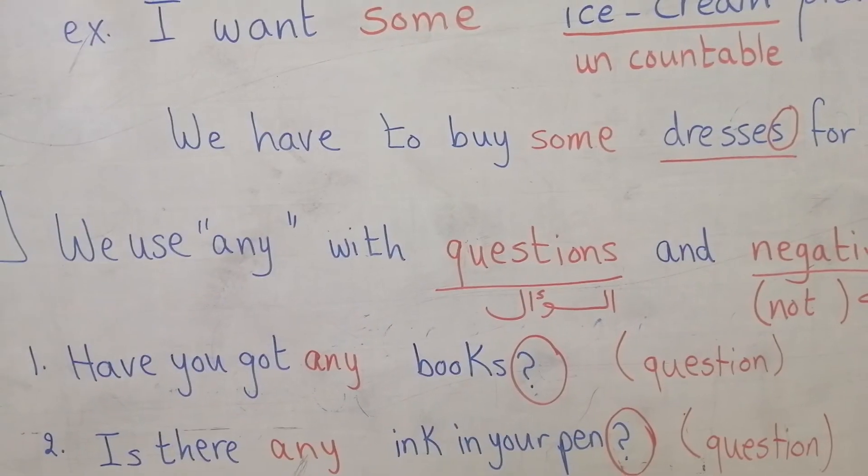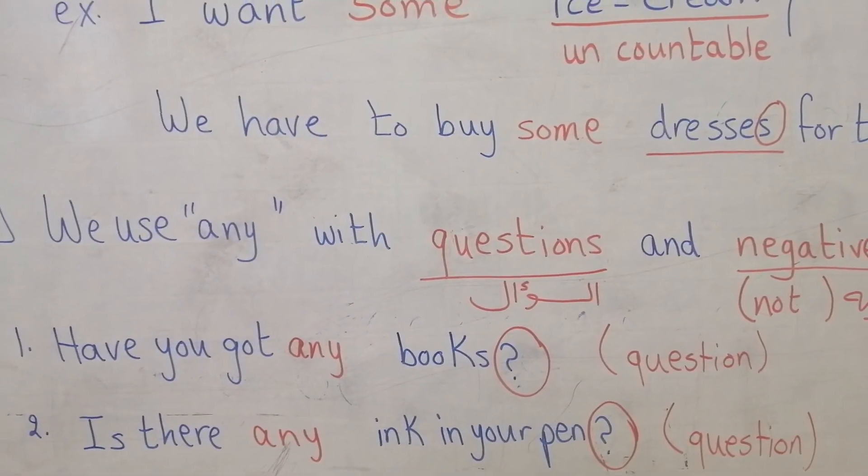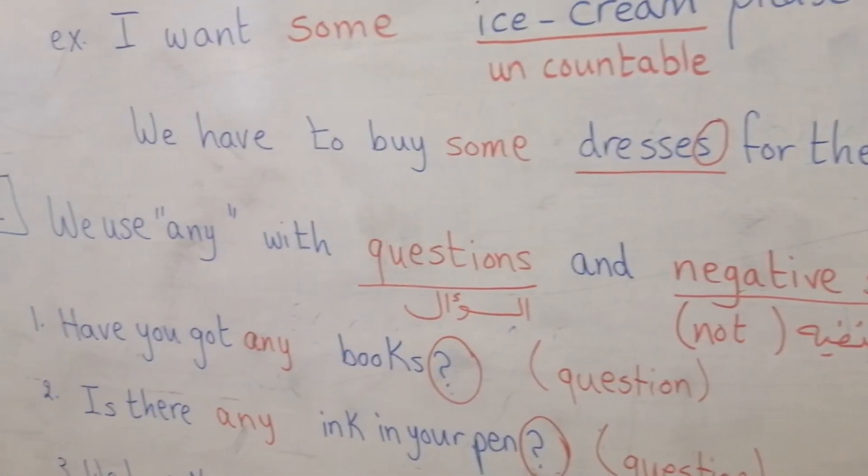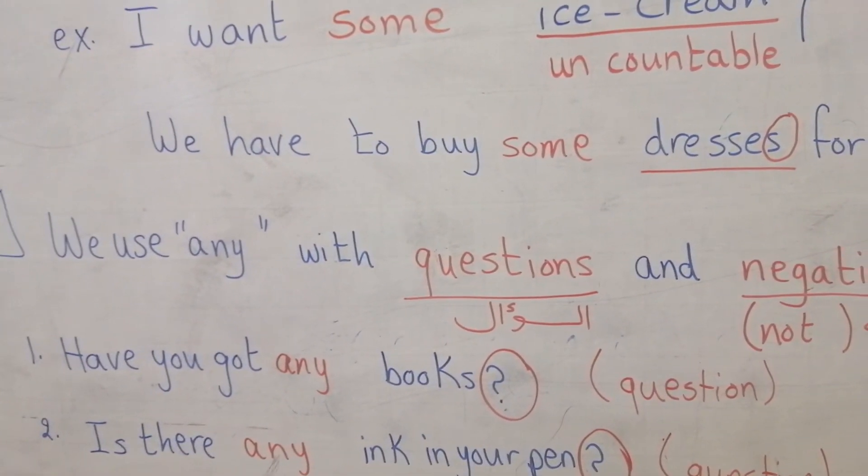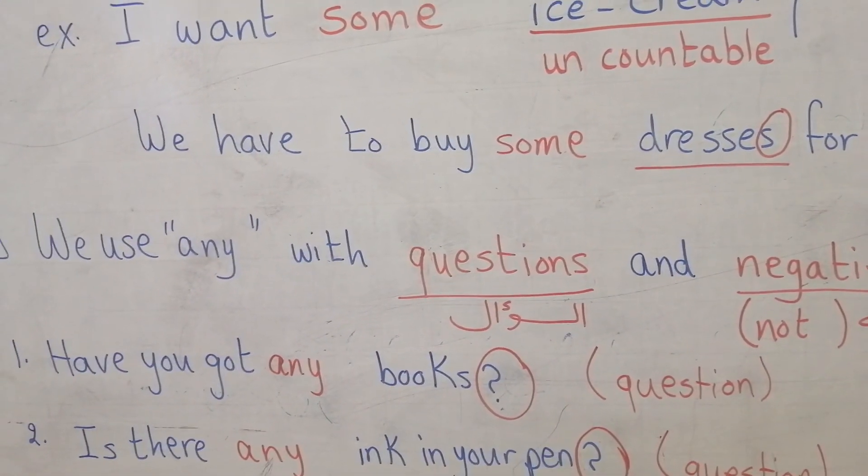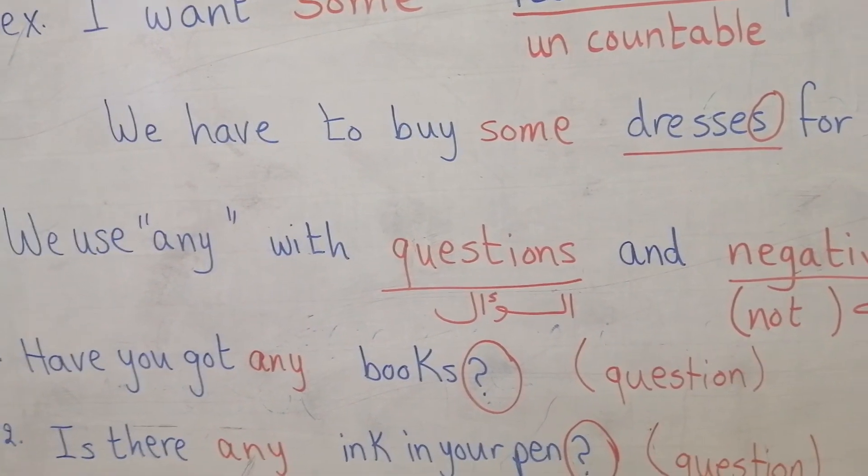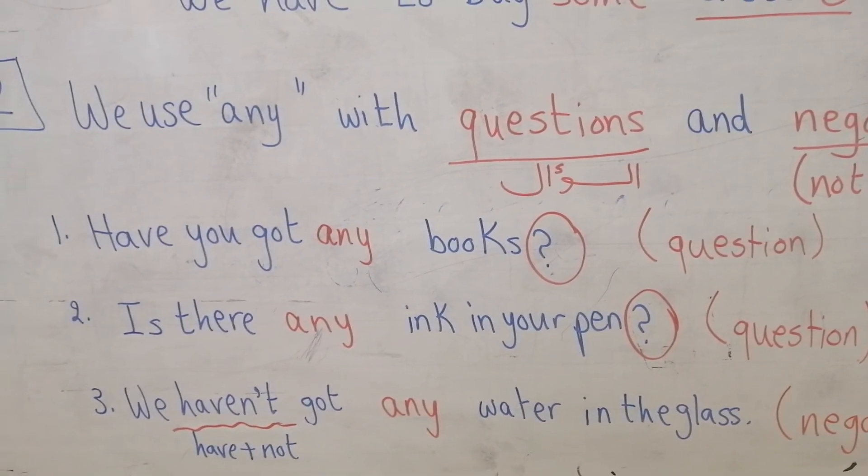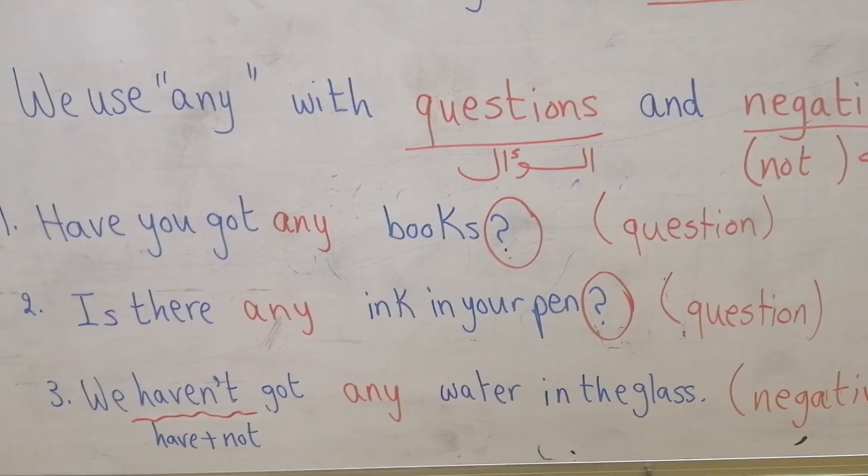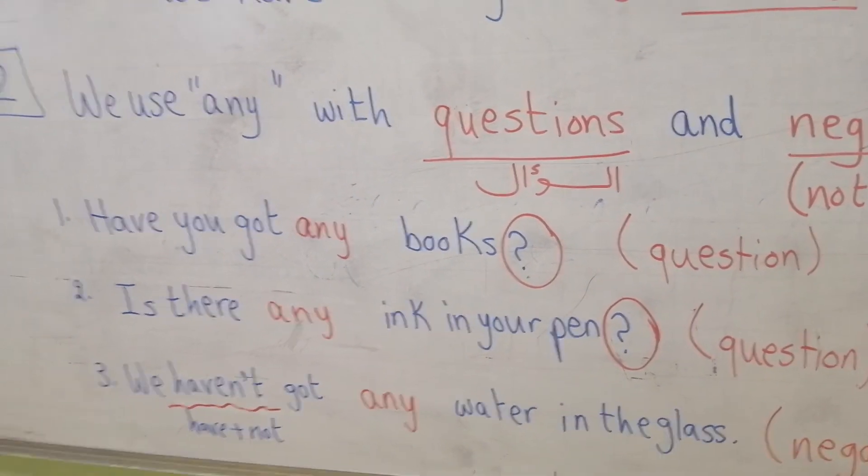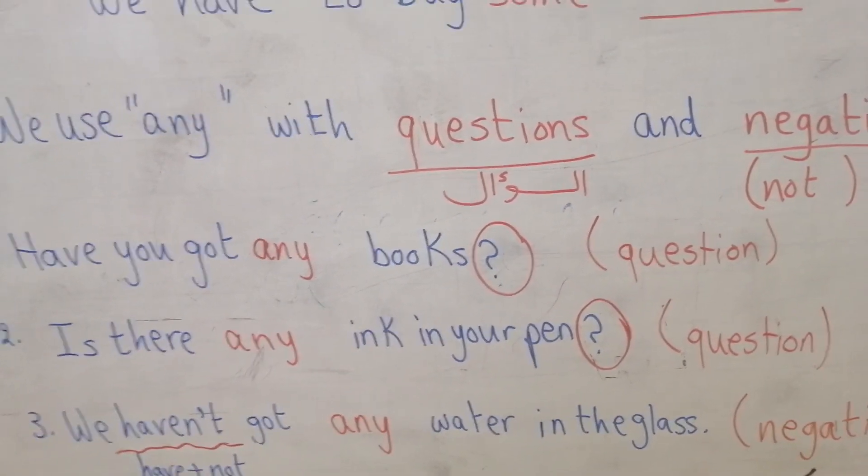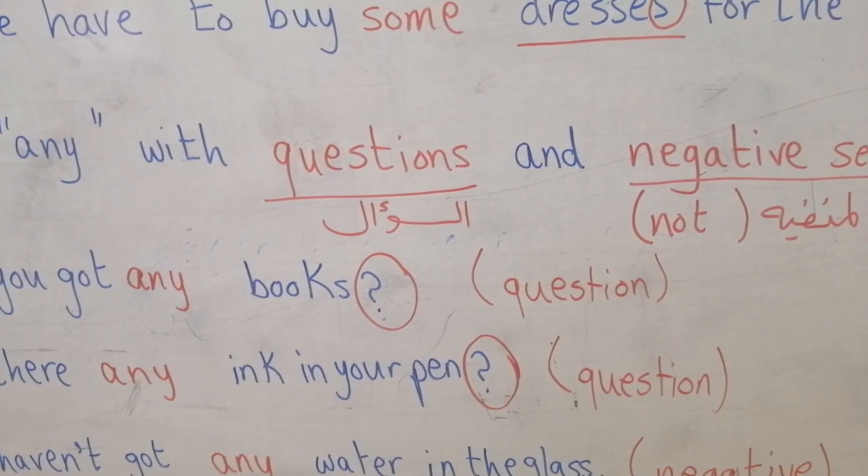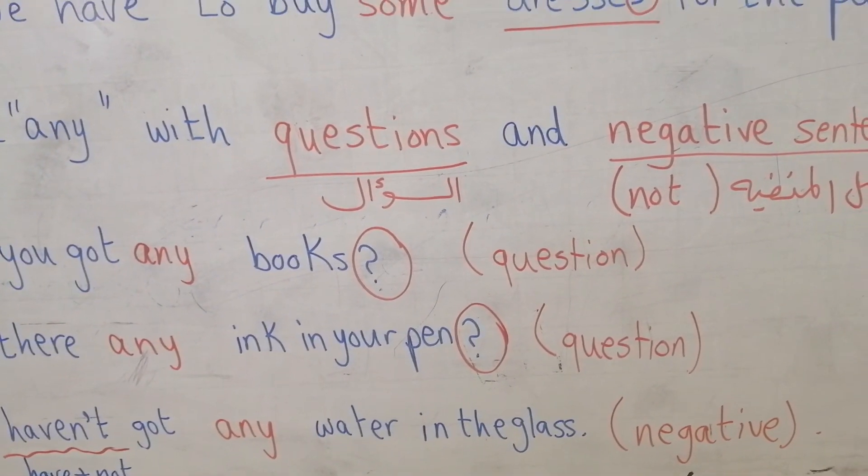What about any? We use any with questions and negative sentences. It's like, have you got any books? It's a question here, so we have to use any with questions. What about sentence three? We haven't got any water in the glass. Look at the verb, it's haven't got. It's a negative verb with not, so we have to use any in negative sentences.